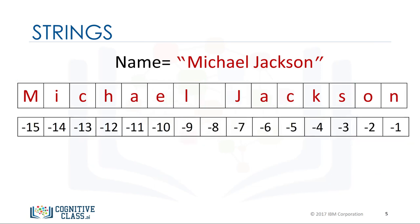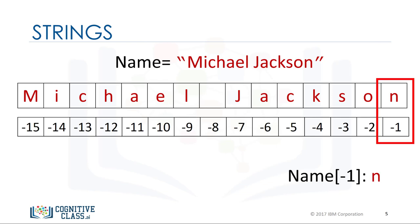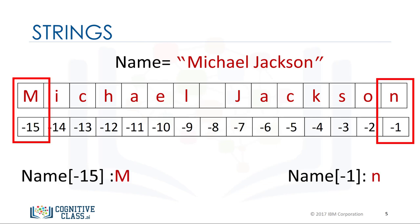We can also use negative indexing with strings. The last element is given by the index negative 1. The first element can be obtained by index negative 15, and so on.